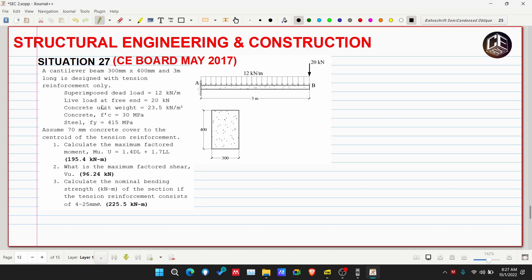Concrete unit weight is 23.5 kilonewtons per meter cube, compressive strength of concrete F'c is 30 megapascals, and yield strength of steel is 415 megapascals. Assume 70 millimeter concrete cover to the centroid of the tension reinforcement.